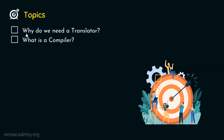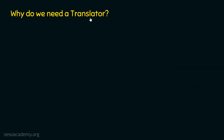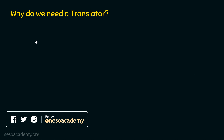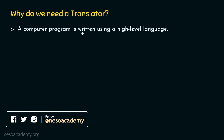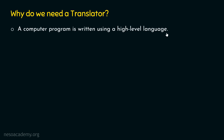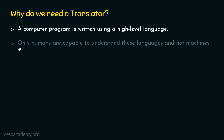We'll first try to understand why we need a translator. A translator is needed and there is a strong reason behind this. Generally, a computer program is written using a high-level programming language — a language which we humans can understand better. On the other hand, a low-level programming language is a language which machines can understand better. We only know high-level programming languages well, like C, C++, Java, Python. The problem is that only humans are capable of understanding these languages, and machines cannot understand them.